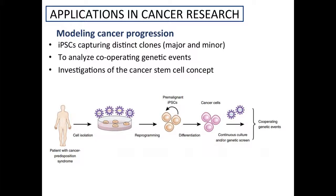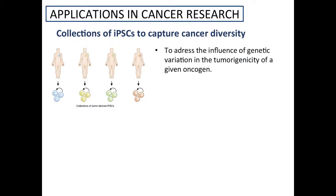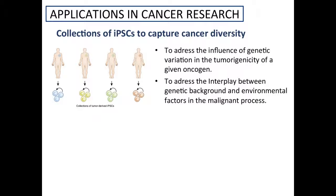Also, iPS cell models, by capturing early cancerous stages, stem and progenitor cells, can be used to search for the cell at the origin of a given cancer — this is an investigation of the cancer stem cell concept. Increasing large collections of iPS cell lines from different genetic backgrounds that capture rare cancer diversity can be used for many types of studies. For example, to address the influence of genetic variation on the tumorigenicity of a given oncogene, and the interplay between genetic background and environmental factors in the malignant process.